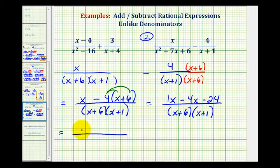So we'd have x minus four x minus 24. So we have negative three x minus 24 all over a factor of x plus six and a factor of x plus one.